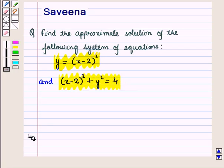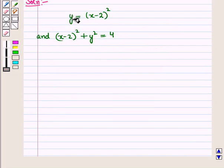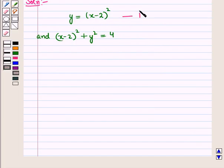plus y² equals 4. Now let us start with the solution of the given question. We are given the system of equations. Let this be equation 1 and this be equation 2. We want to find its solution.